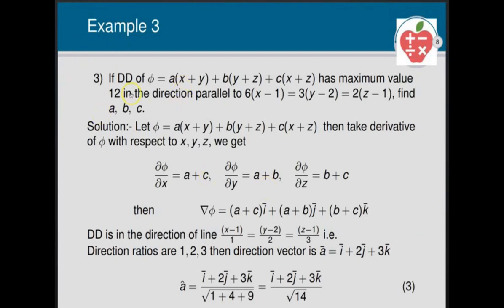Example 3: The directional derivative of φ = a(x+y) + b(y+z) + c(x+z) has maximum value 12 in the direction parallel to the line 6(x−1) = 3(y−2) = 2(z−1). Find the values of a, b, c. Computing partial derivatives: ∂φ/∂x = a + c, ∂φ/∂y = a + b, ∂φ/∂z = b + c. So grad φ = (a+c)i + (a+b)j + (b+c)k.